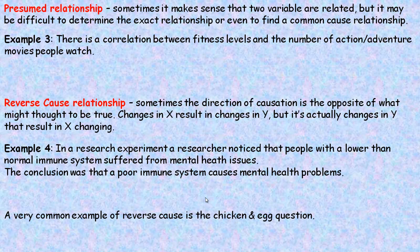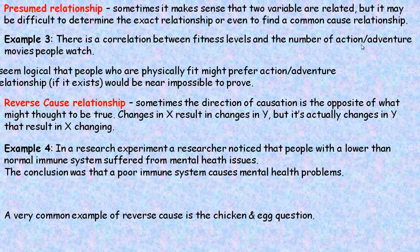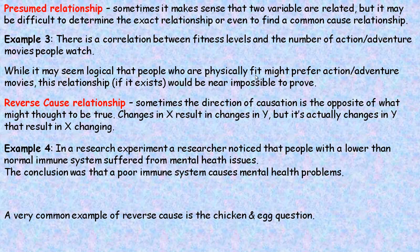A presumed relationship is when it makes sense that two variables might be related, but it may be very difficult to determine the exact relationship, if one even exists. For example, there's a correlation between fitness levels and the number of action adventure movies people watch — the more fit people are, the more action adventure movies they watch. It might seem logical that physically fit people prefer action adventure movies, but this relationship would be very difficult or near impossible to prove.